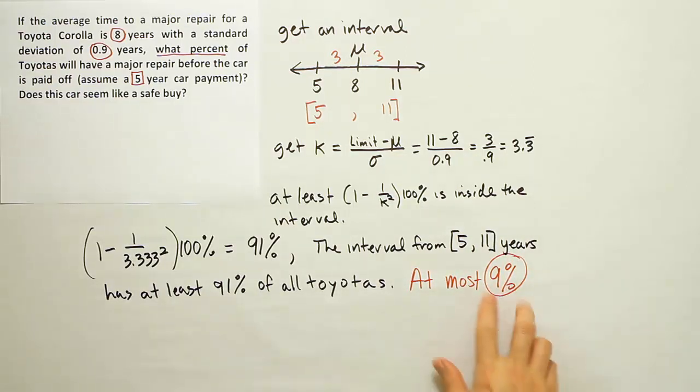Now, again, we spoke about this, I think, in another video, but in Chebyshev's theorem, we have no idea that it's symmetric. So you don't want to make the mistake of saying, well, you know, at most could be 9% outside, and since we're talking about below 5, you know, half of that would be, you know, the value that's at most, so we'd say at most, you know, 4.5% or something. That's not correct, right? Because for all we know, all the Toyotas that fail outside of this interval could fail before 5 years. For all we know, all the Toyotas that fail outside of this interval could fail after 11 years. That's why we wrote this phrase, at most, before the 9%.